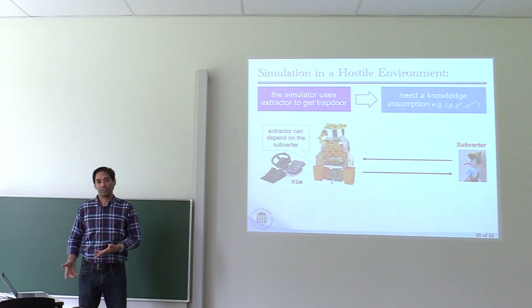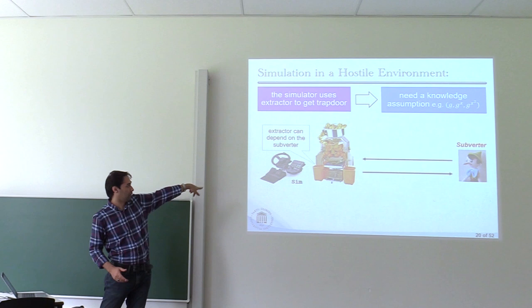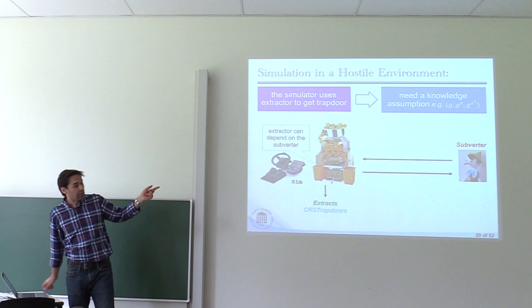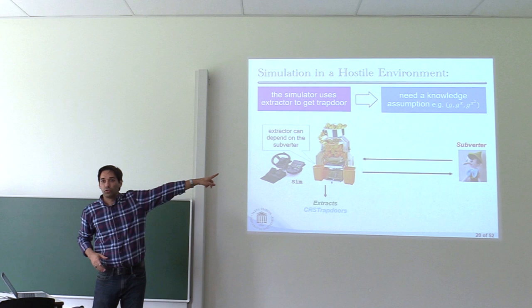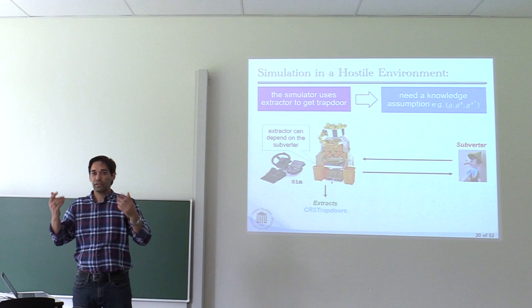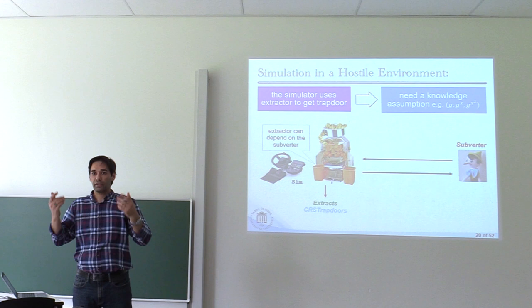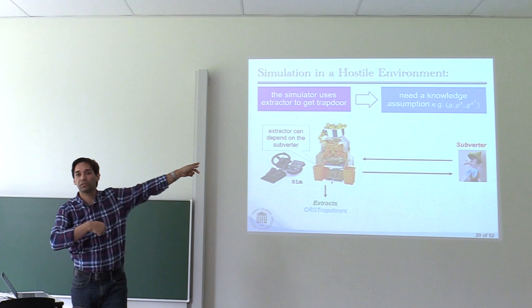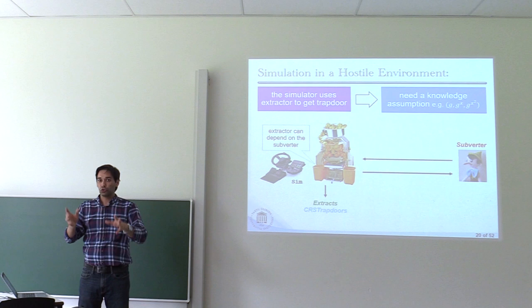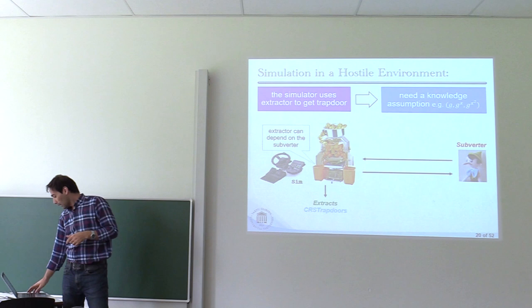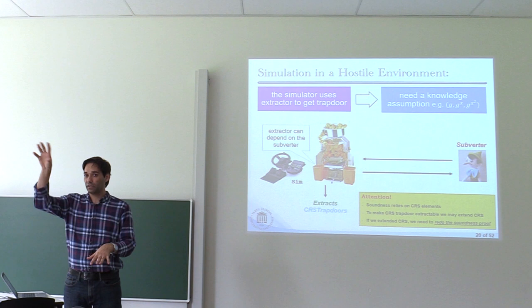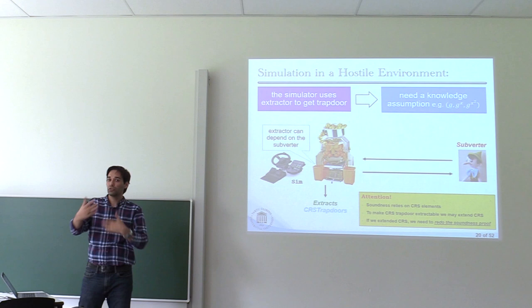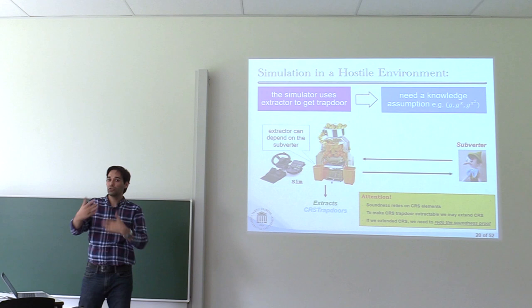We can use such non-black-box extraction in our simulator. To do that, we enforce the subverter to put some elements in a particular form — specifically, some trapdoors needed for simulation should be published in both groups. For example, for the Groth case we use a knowledge assumption that if an adversary in an asymmetric bilinear group can produce an element x in both groups, basically he knows it. You enforce the CRS generator to put trapdoors in both groups, and with that you can extract them. You must be careful, however: when changing the CRS elements you also need to verify the soundness proof, because giving more information in the CRS might invalidate your existing proof.